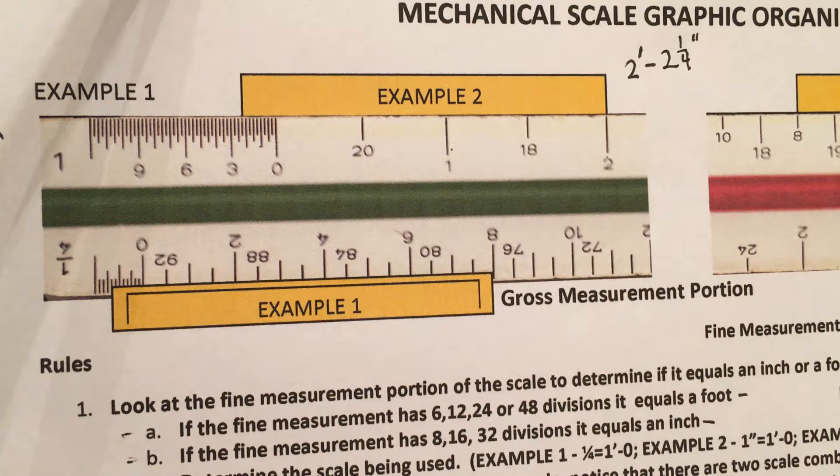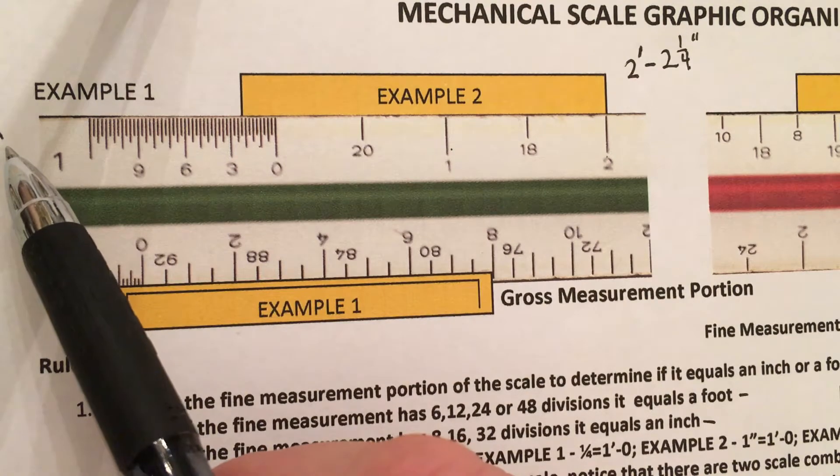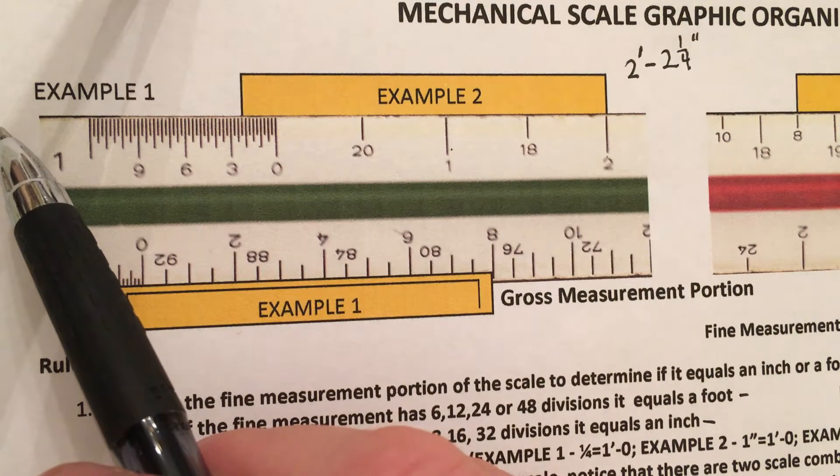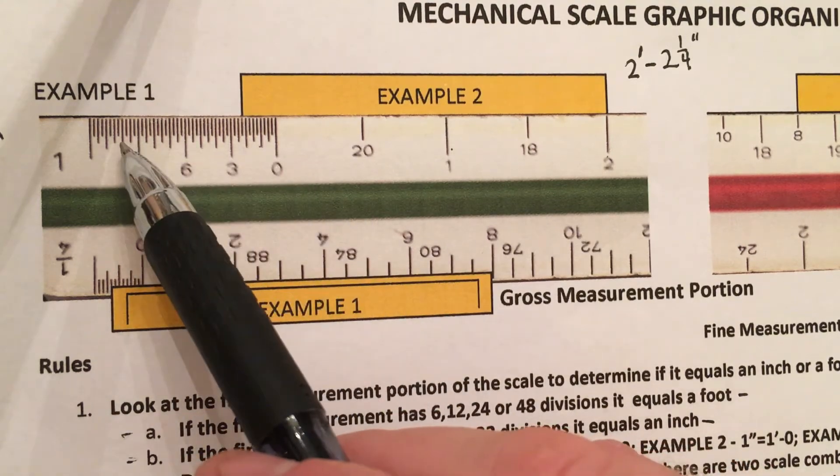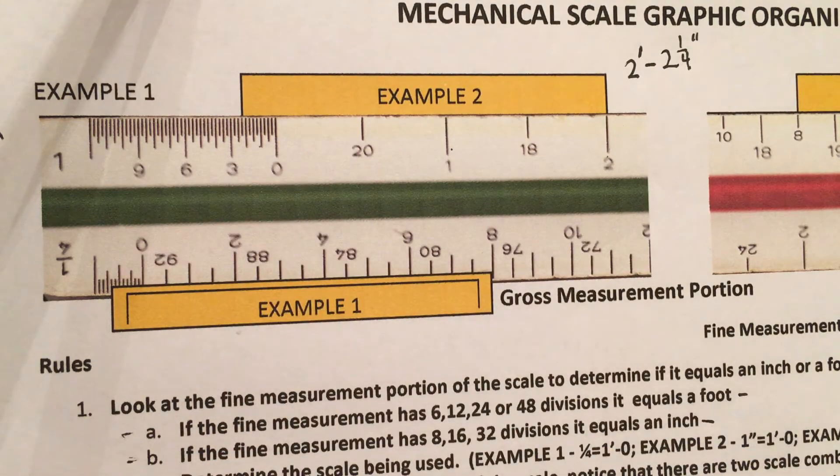That's how you read a mechanical scale that is accurate to one foot because of the fine measurement having 48 divisions. All right, thank you.